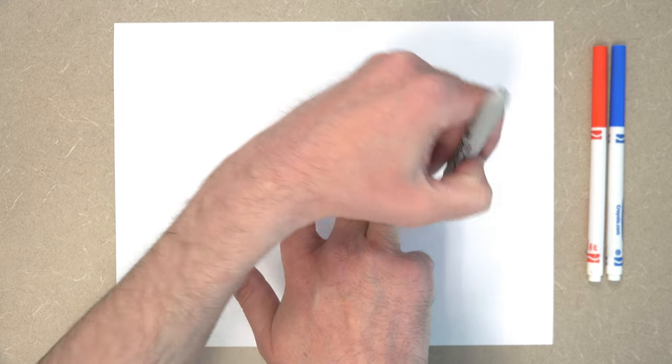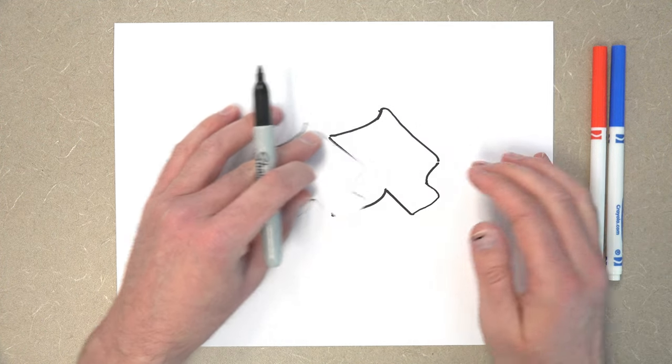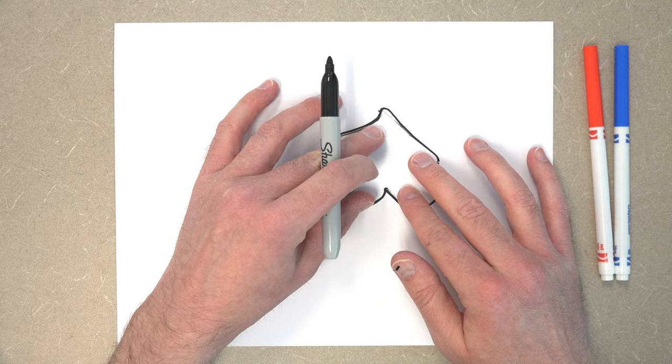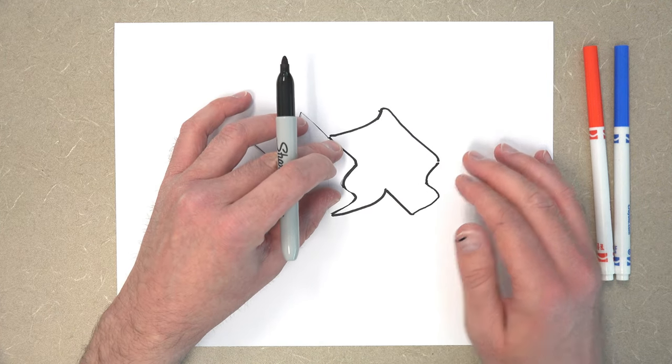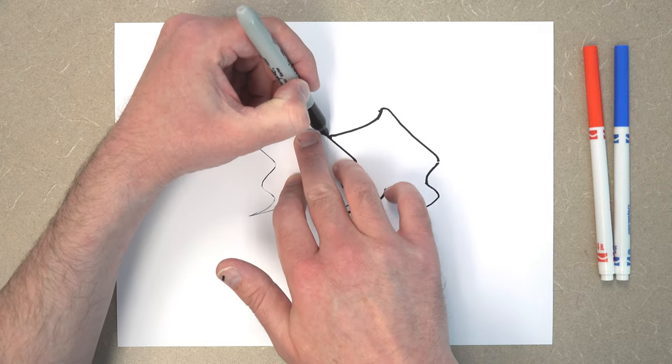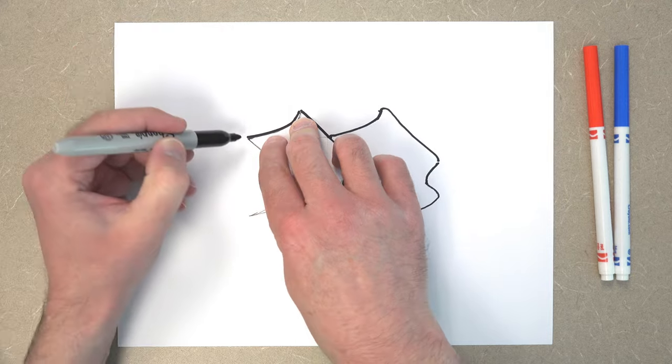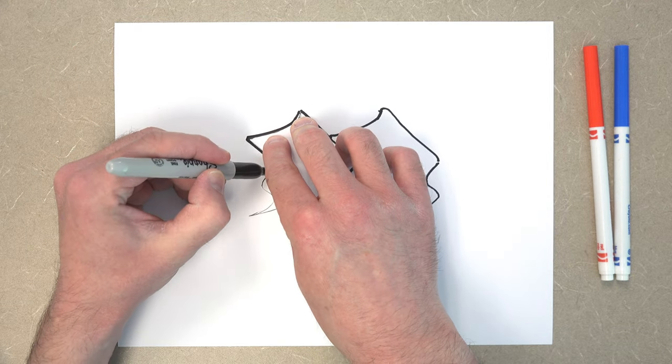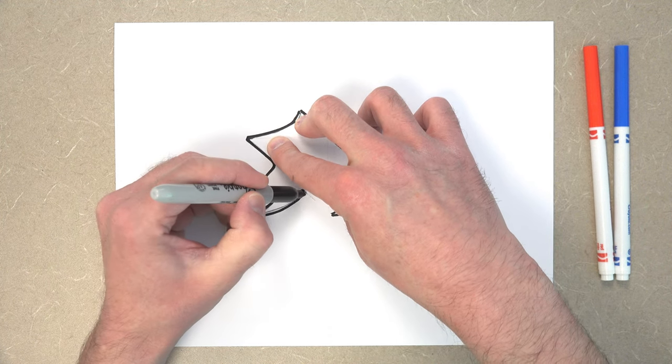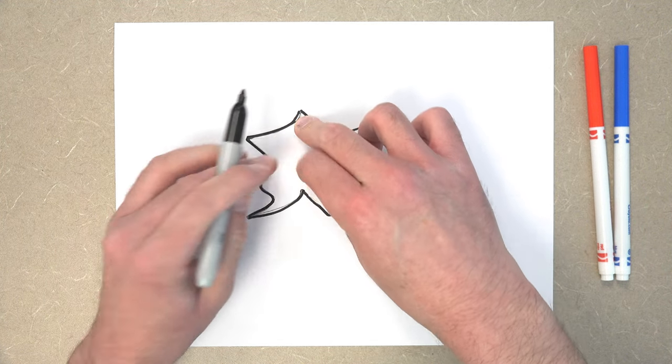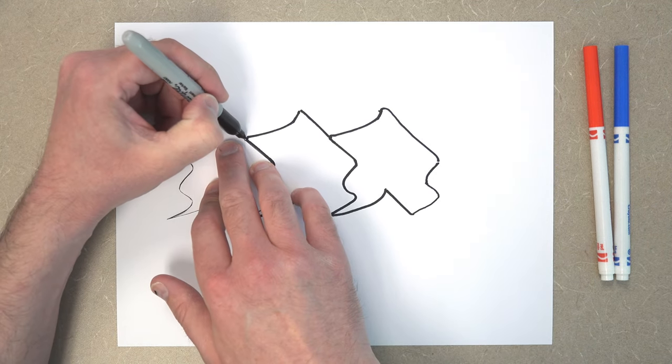There we go. And then what we're going to do is slide the template over so that it fits in perfectly next to the outline you just drew. And repeat the process. And you're just going to do this until the entire paper is filled up with your tessellation pattern.